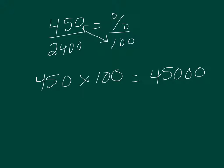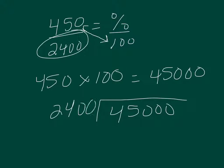Step two, then, is to take that amount and divide by what's left over. And what's left over is my 2,400. So I take 45,000, I divide by 2,400.